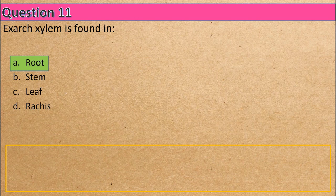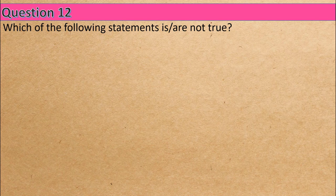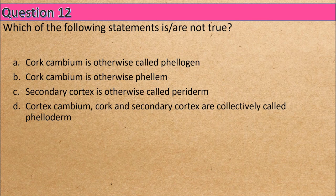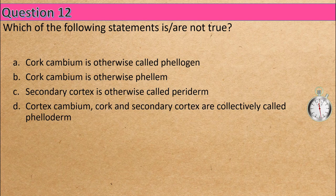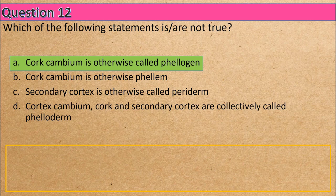Question 12: Which of the following statements is not true? Option A: cork cambium is otherwise called phellogen, Option B: cork cambium is otherwise called phellogen, Option C: secondary cortex is otherwise called periderm. The correct answer is Option A: cork cambium is otherwise called phellogen.